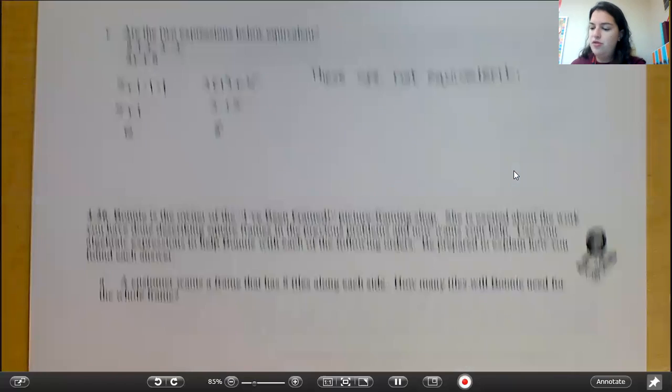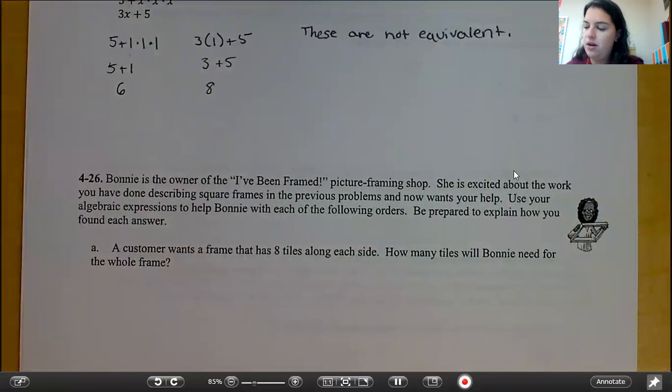Okay, moving on to 426. Bonnie is the owner of I've Been Framed Picture Framing Shop. She's excited about the work you have done describing square frames in the previous problems and now wants your help. Use your algebraic expressions to help Bonnie with each of the following orders. Be prepared to explain how you found each answer. A customer wants a frame that has 8 tiles along each side. How many tiles would Bonnie need for the whole frame? Go ahead and pause your video and answer part A.